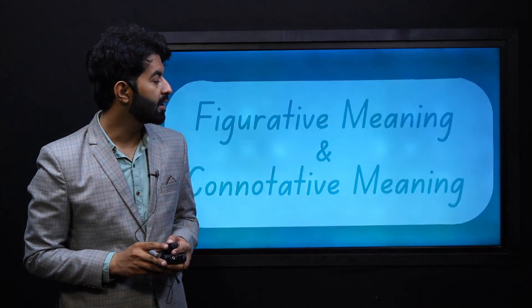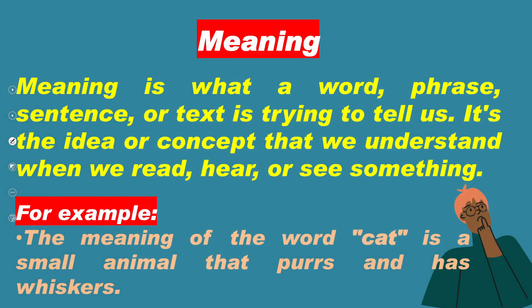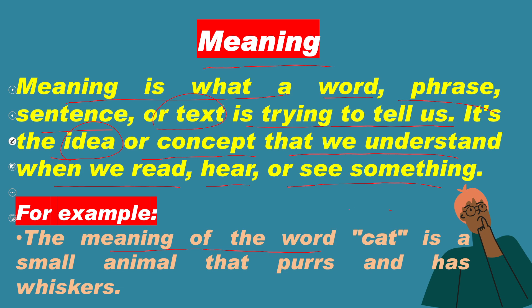Let's try to understand and define meaning. Meaning is what a word, phrase, sentence, or text is trying to tell us — it's the idea or concept that we understand when we read, hear, or see something. For example, the meaning of the word 'cat' is a small animal that purrs and has whiskers.